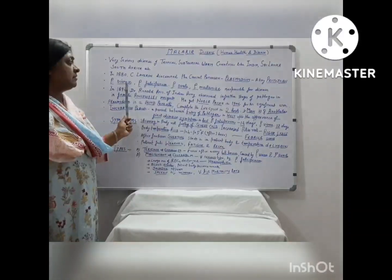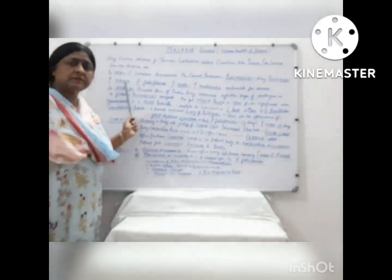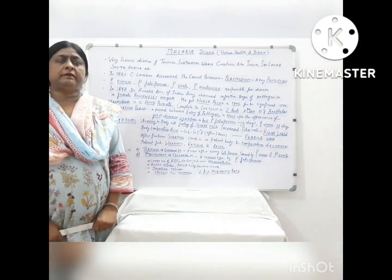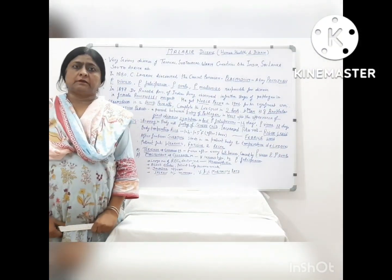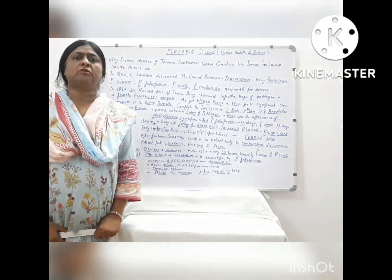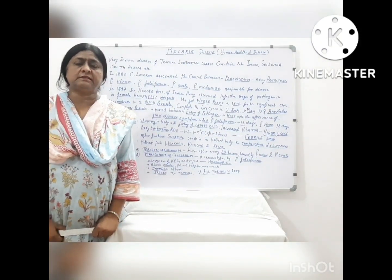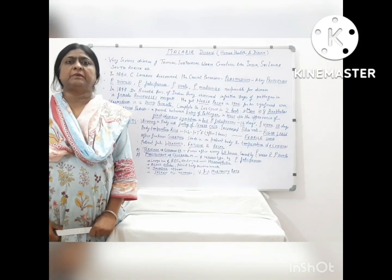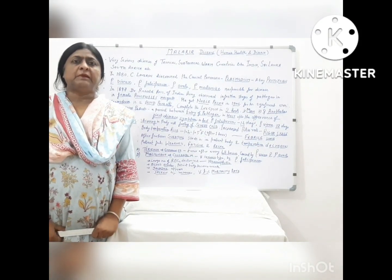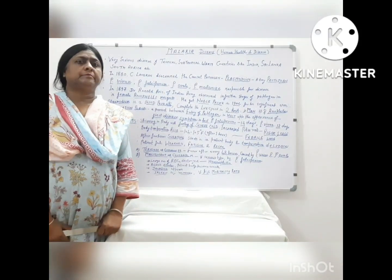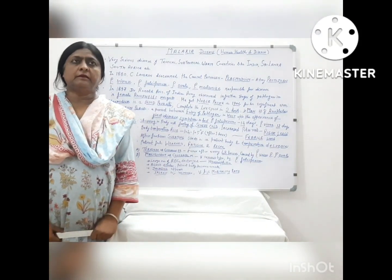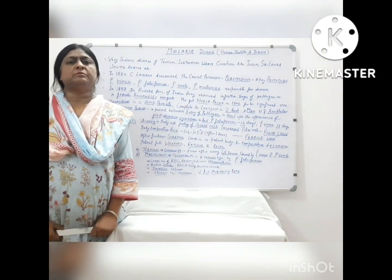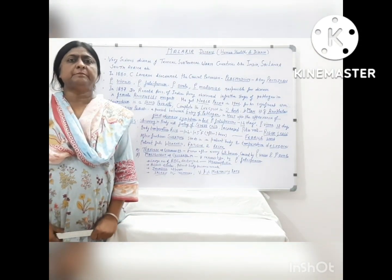There are four species which are very common and famous for causing this disease: Plasmodium Vivax, Plasmodium Malariae, Plasmodium Ovale, and Plasmodium Falciparum.